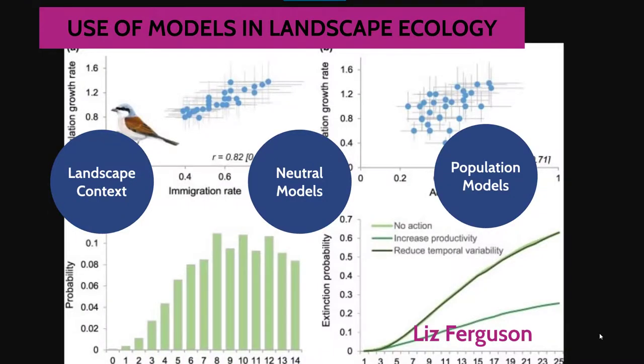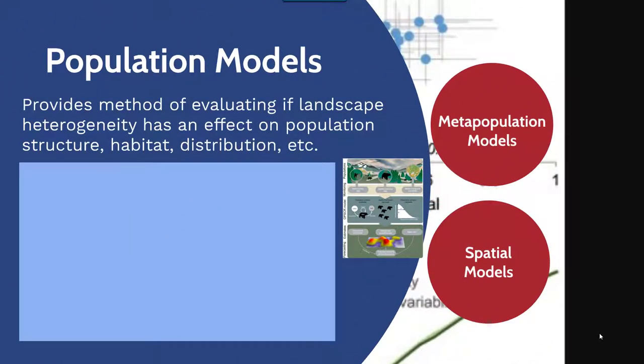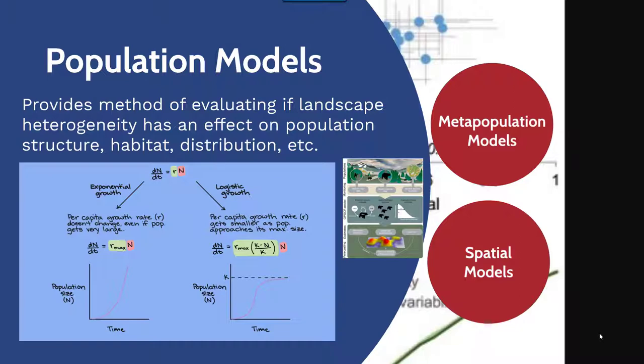Finally, we can focus on population models. A population model provides a method of evaluating if landscape heterogeneity has an effect on population structure, the habitat the population occupies, or the distribution of that population. Historically we're familiar with simple exponential and logistic growth models that are really just looking at growth rate and not particularly looking at other environmental factors. One group of models we can look at are metapopulation models.